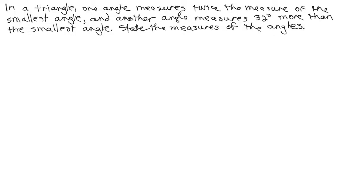In a triangle, one angle measures twice the measure of the smallest angle, and another angle measures 32 degrees more than the smallest angle. We want to state the measures of the angles.